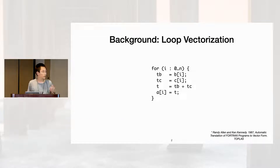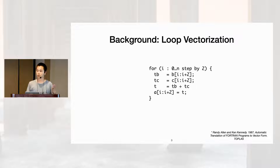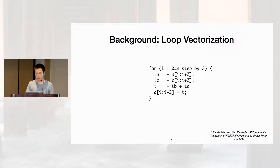Auto-vectorization is traditionally done with loop vectorization, where you take a loop and widen its scalar loop instructions into wider vector instructions. This may seem straightforward, but you can only do it if you can prove that the loop iterations are completely independent.